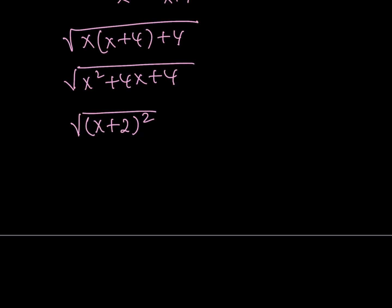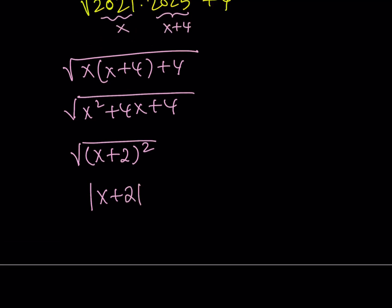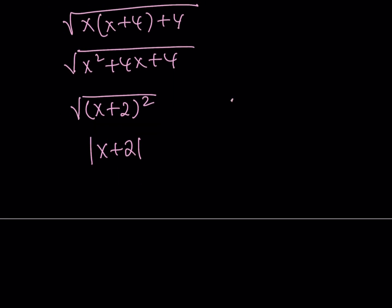And as you know this is equal to the absolute value of x plus 2 but since x is equal to 2021 and that is actually greater than negative 2 obviously. In this case x plus 2 is going to be a positive quantity therefore its absolute value is going to equal x plus 2.